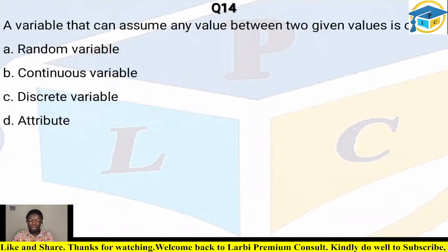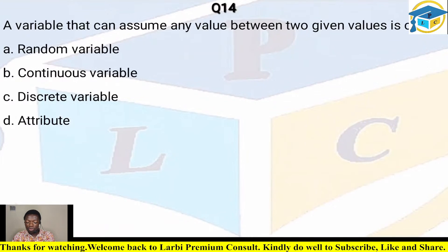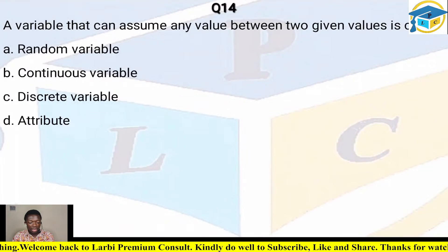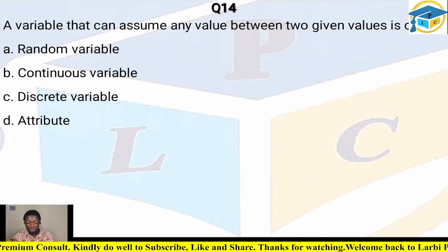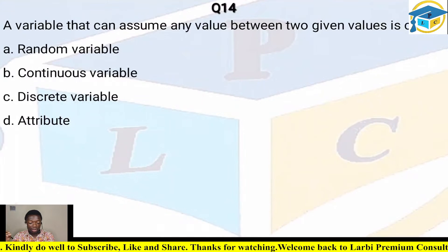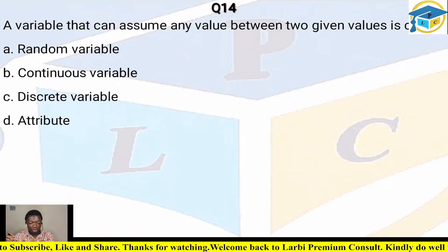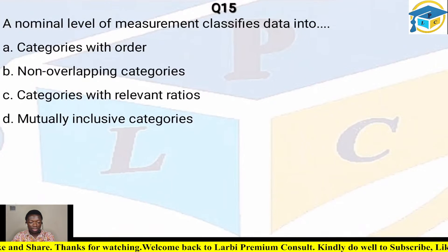Question fourteen: a variable that can assume any value between two given values is called — A) a random variable, B) a continuous variable, C) a discrete variable, D) an attribute. When a variable has values between two given values, we are talking about a continuous variable. The correct answer is B.